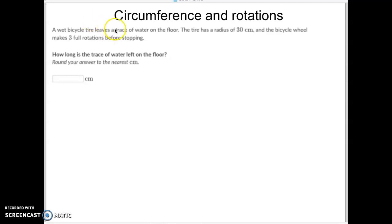So here's what we're doing. We are finding the circumference of something and then we have to multiply that by how many rotations there are. Okay, so let's take a look at this.